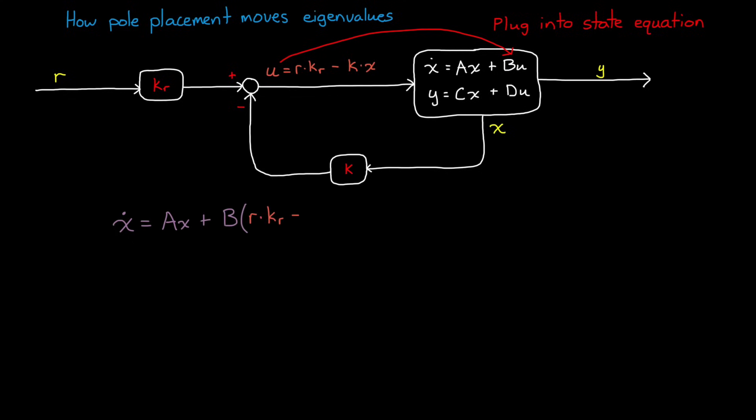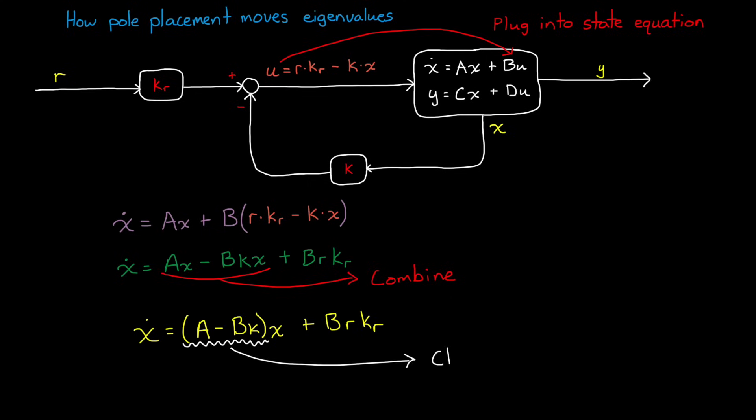If we plug this control input into our state equation, we're closing the loop, and we get the following state equation. Notice that A and minus BK both act on the state vector, so we can combine them to get a modified A matrix. This is the closed loop A matrix, and we have the ability to move the eigenvalues by choosing an appropriate K, and this is easy to do by hand for simple systems.